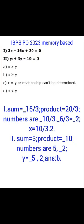IBPS PO 2023 memory-based question, number one. Equation one: 3x² - 16x + 20 = 0. Equation two: y² + 3y - 10 = 0. The relation between x and y is given as the following options: (a) x is greater than y, (b) x is greater than or equal to y, (c) x is equal to y, or (d) relationship cannot be determined, (e) x is less than y.